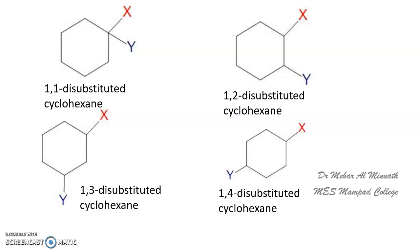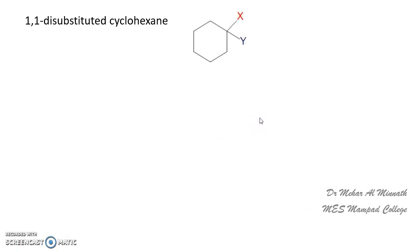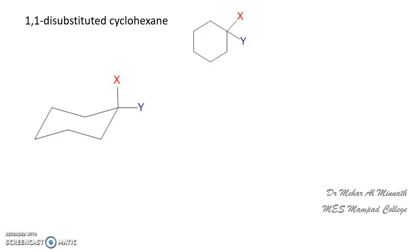We will be taking up the first class, that is the 1,1-disubstituted cyclohexane. We know that cyclohexane prefers to take up the chair conformation — we have discussed in detail why cyclohexane prefers the chair conformation. Here both the substituents are on the same carbon, and I have put them as x and y to indicate that both substituents are different.